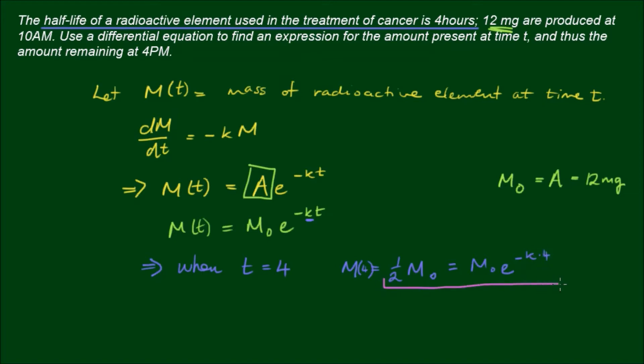So if we just consider this then, we've got an M₀ on the left and an M₀ on the right and these will cancel. So that implies 1/2 equals e^(-4k).